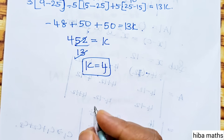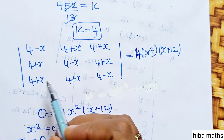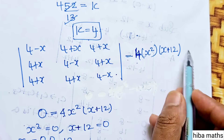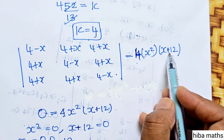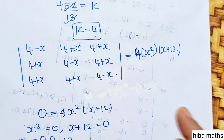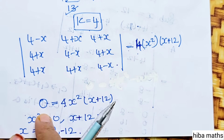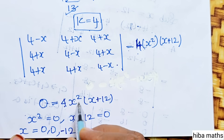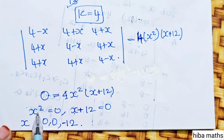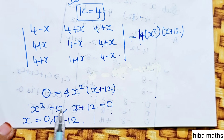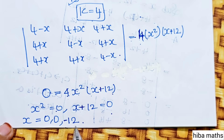x is solved. The determinant equals the factor. k equals 4, x squared, x plus 12. Now the factor equals 0: 0 into 4, x squared, x plus 12 equals 0. So x squared equals 0 and x plus 12 equals 0. Solving: x equals 0, 0, and x equals minus 12. So the x order values are 0, 0, minus 12.